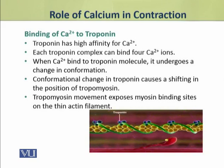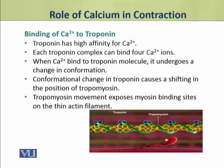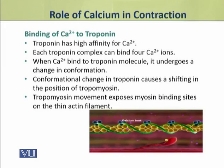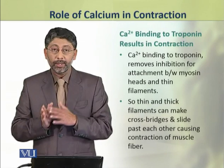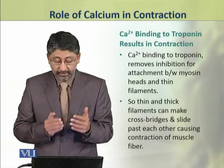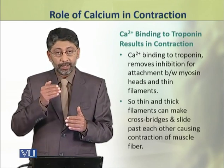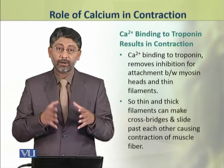This conformational change in troponin causes a shifting in the position of tropomyosin. When tropomyosin moves from its position, as a result, the myosin binding sites on the actin thin filament become exposed. The calcium binding to troponin removes the inhibition that was present for binding of myosin with actin. When this inhibition is removed, myosin heads attach to actin and cross bridges are formed.